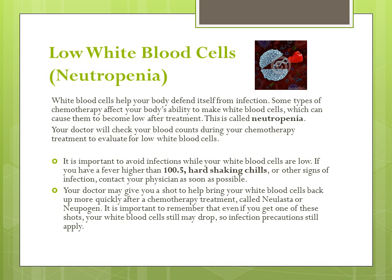Some types of chemotherapy make it harder for your bone marrow to produce new white blood cells. White blood cells help your body defend itself from infection. There are many types of white blood cells; one is called a neutrophil. When your neutrophil count is low, this is called neutropenia. Your doctor will regularly check your blood counts during your chemotherapy treatment to evaluate for low white blood cells. It is important to watch for signs of infection when you have neutropenia — monitor for fevers greater than 100.5, hard shaking chills, or other signs of infection. It is important to contact your doctor immediately if any of these should occur.